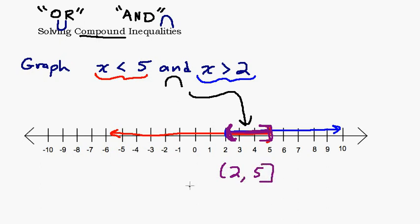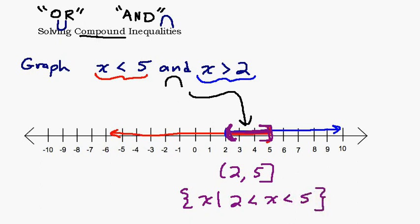So the solution — using purple — is where these overlap: a soft bracket on 2, a soft bracket on 5, and everything in between. Since it's an 'and,' it's just that intersection. For interval notation, we simply write (2, 5) with brackets. For set builder notation, we write: the set of all x such that 2 is less than or equal to x, which is less than or equal to 5. This means x has to be between 2 and 5.